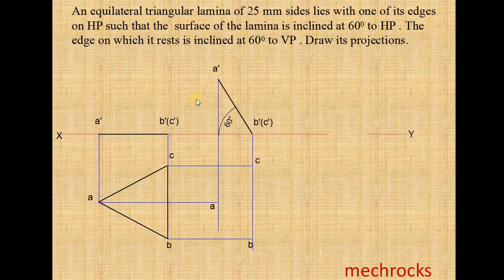Now we join the AB, AC and BC. Now see here, the surface is inclined at 60 degrees to HP. The BC is on HP. This BC making an angle of 60 degrees to VP.